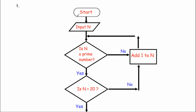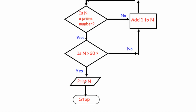Let's have a look at question number one. We've been given a flowchart. We start, input the number N, and then we're asked: is N a prime number? If it's not, we add one and ask again. When N is a prime number, we go on down and answer: is N bigger than 20? If not, add one and go back up to the prime check. When N is prime and bigger than 20, we print N and stop.